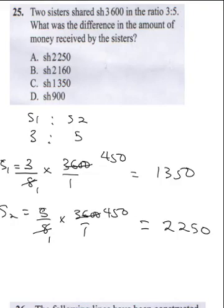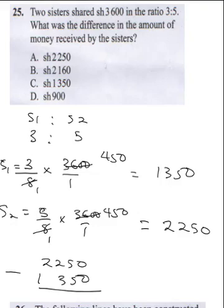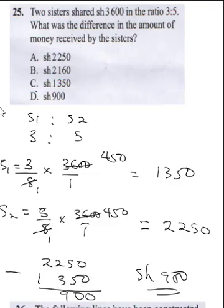The question says what was the difference in the amount. So it's going to be 2,250 minus 1,350. When you subtract, 22 minus 13 gives you 900. So our final answer is 900.